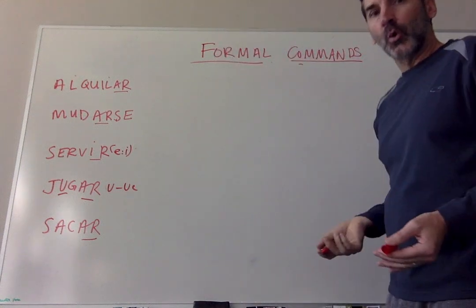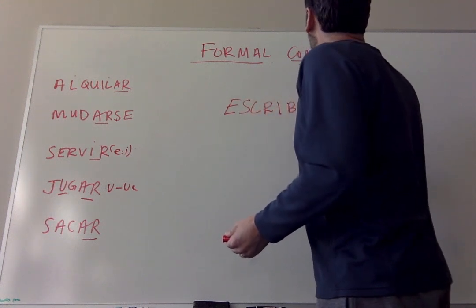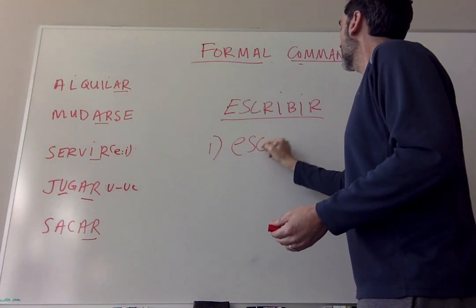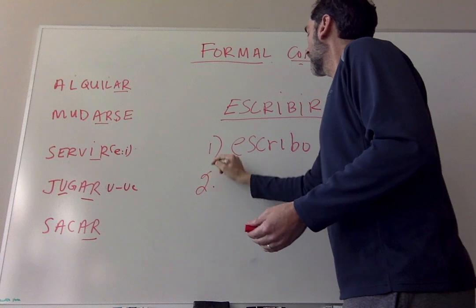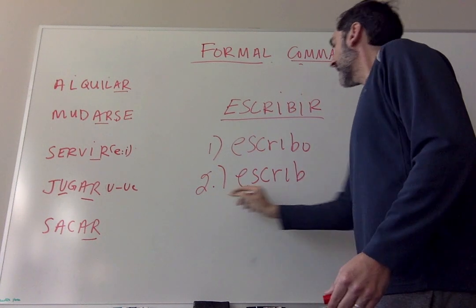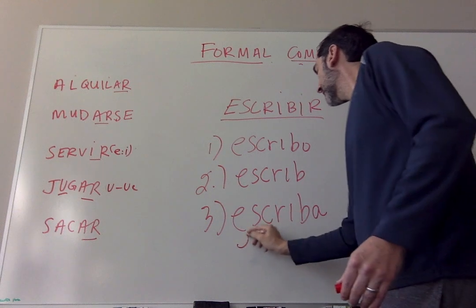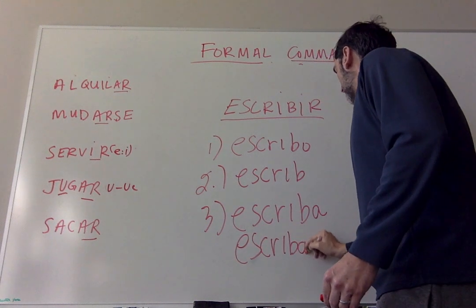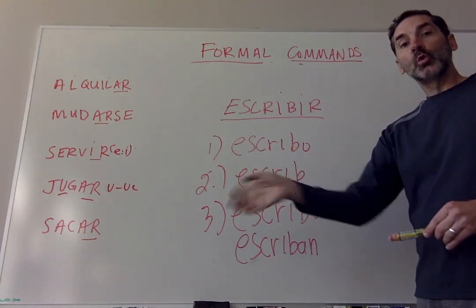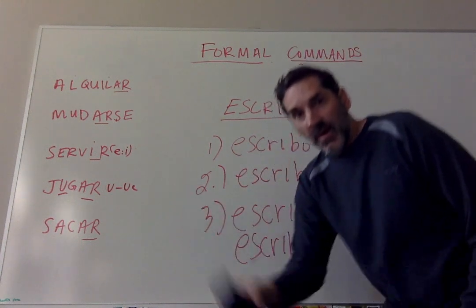Let's do one more — escribir, 'to write.' Step one: yo form — escribo. Step two: drop the O — you're left with escrib. Step three: add opposite endings. It's an IR verb, so add AR endings: usted escriba, ustedes escriban. Escriba usted. Escriban ustedes. That's a regular IR verb.